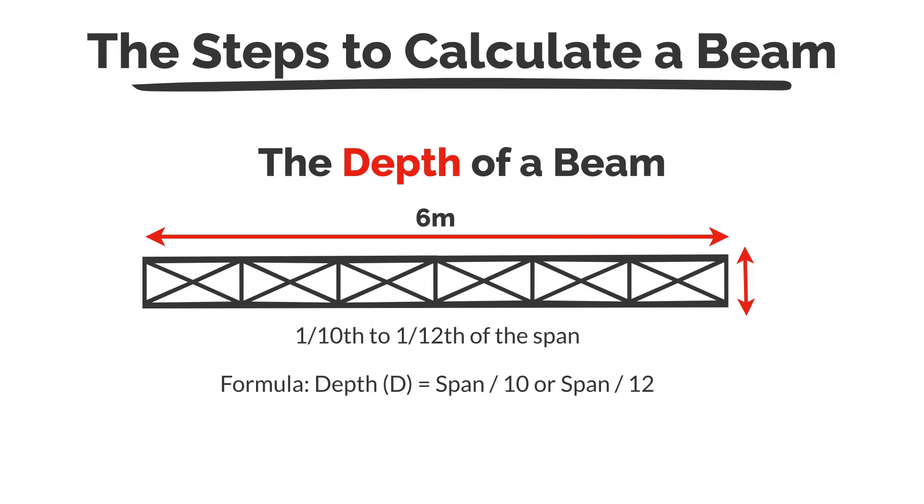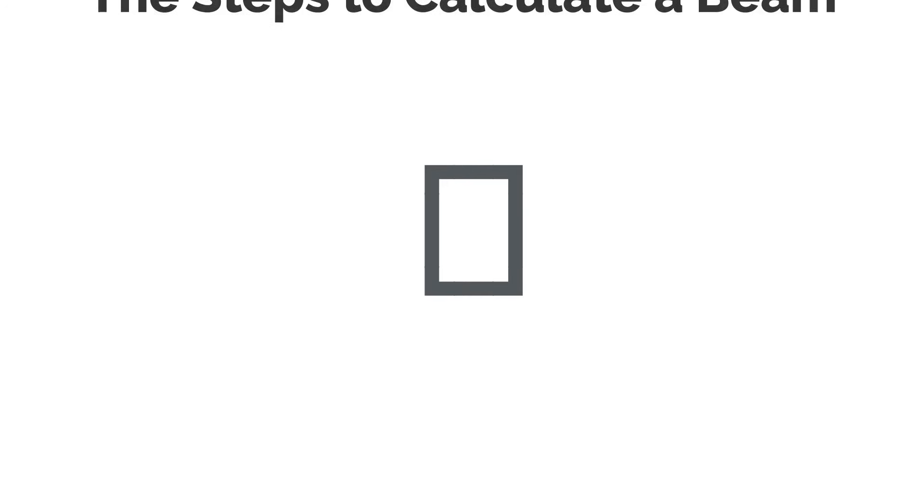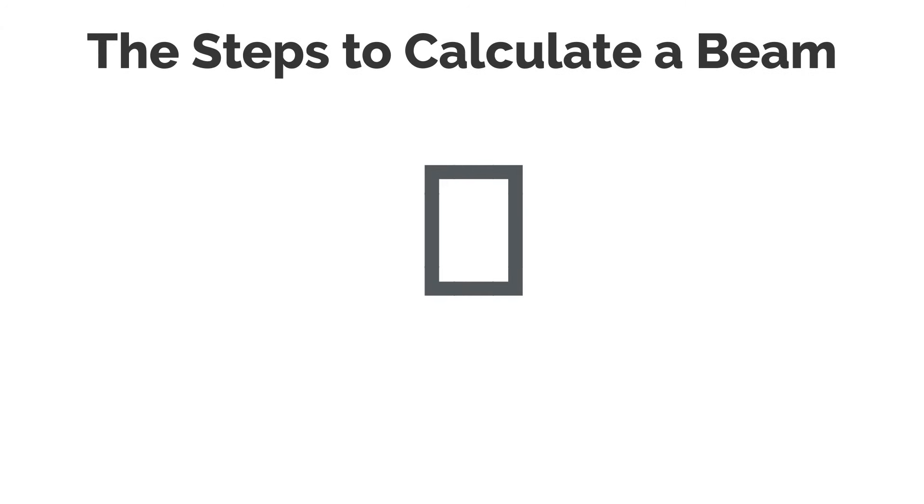Let's say you have a beam that spans 6 meters. Here's how you calculate the depth. Using the one-tenth rule, we'll take the depth equals 6 over 10. This means that the beam should be about 600 millimeters deep to support the load safely.